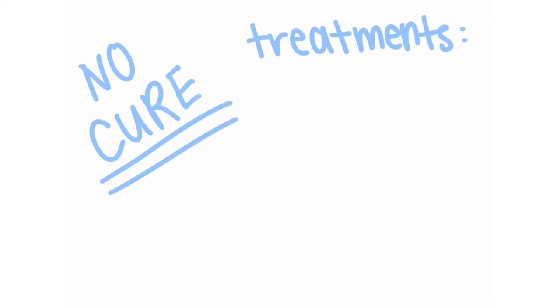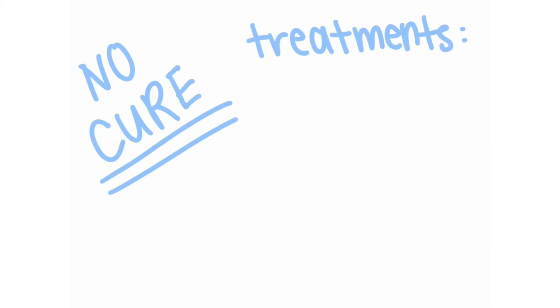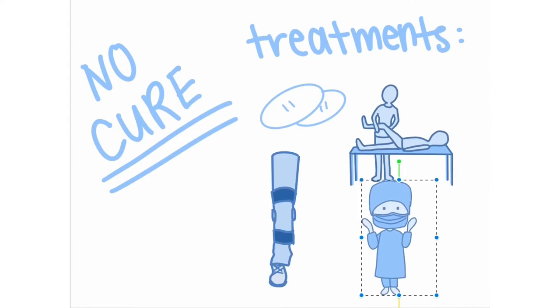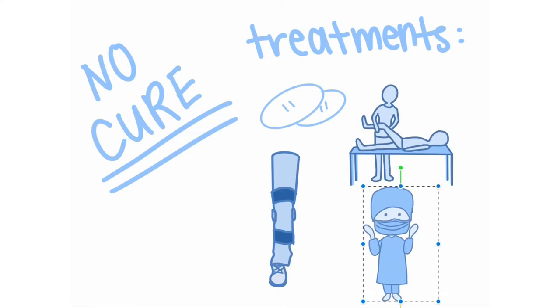Paralytic polio patients may use the respirator to help them breathe, while others use painkillers, physical therapy, braces, and surgery to restore limb function.